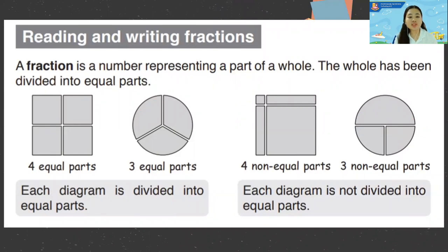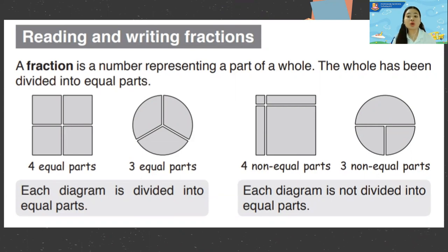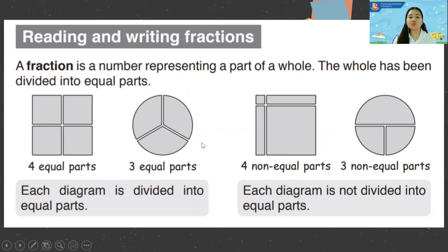Reading and writing fractions. So what is a fraction? A fraction is a number representing a part of a whole. The whole has been divided into equal parts. Remember, for it to be a fraction, it should be divided into equal parts. For example, a square divided into four equal parts, and a circle divided into three equal parts — each diagram is divided into equal parts.